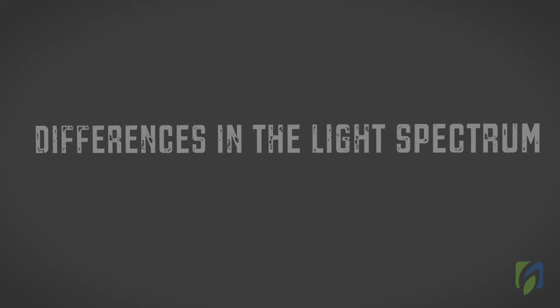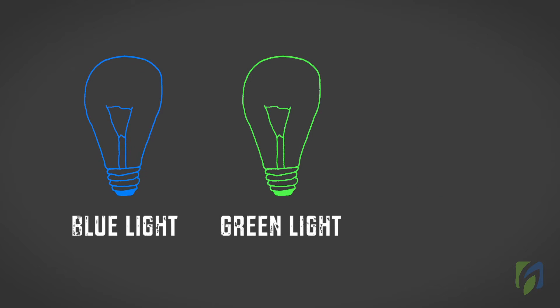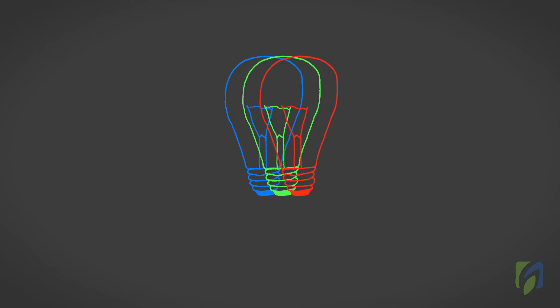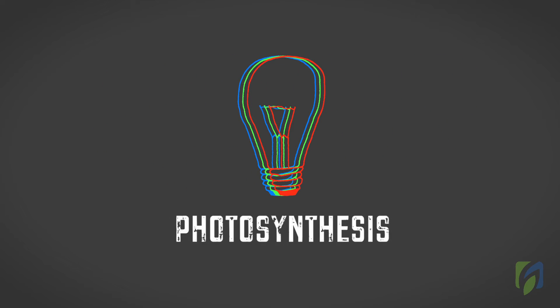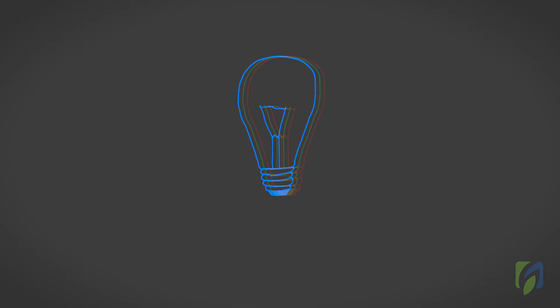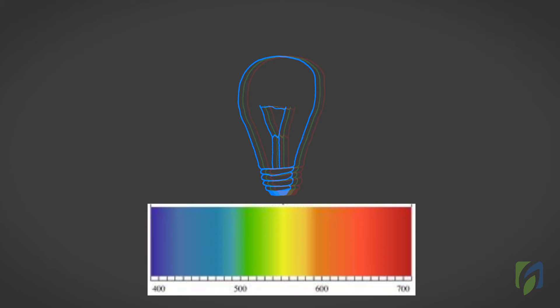Differences in the light spectrum: Blue light, green light, and red light make up the spectrum of light primarily used for photosynthesis. Blue light is the portion of light that has wavelengths between 400 and 500 nanometers.